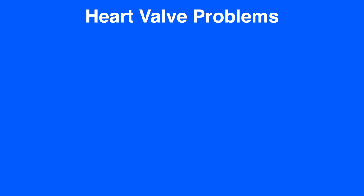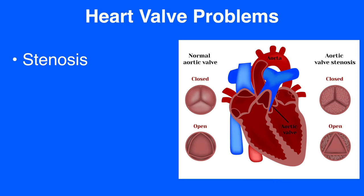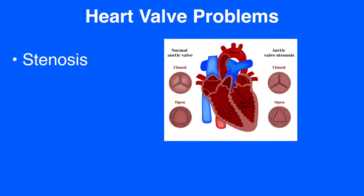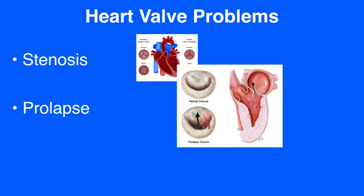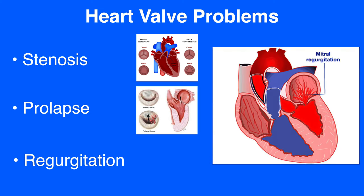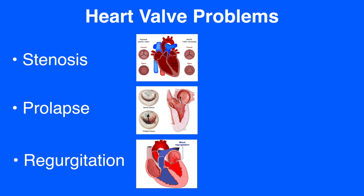It can be classified as mild, moderate or severe, and it can lead to an enlarged heart or heart failure from the following problems. Stenosis is when the valve opening becomes narrow and restricts blood flow through it. Prolapse is when a valve slips out of place or the flaps known as leaflets do not close properly. And regurgitation is when blood leaks backwards through a valve, sometimes due to a prolapse.